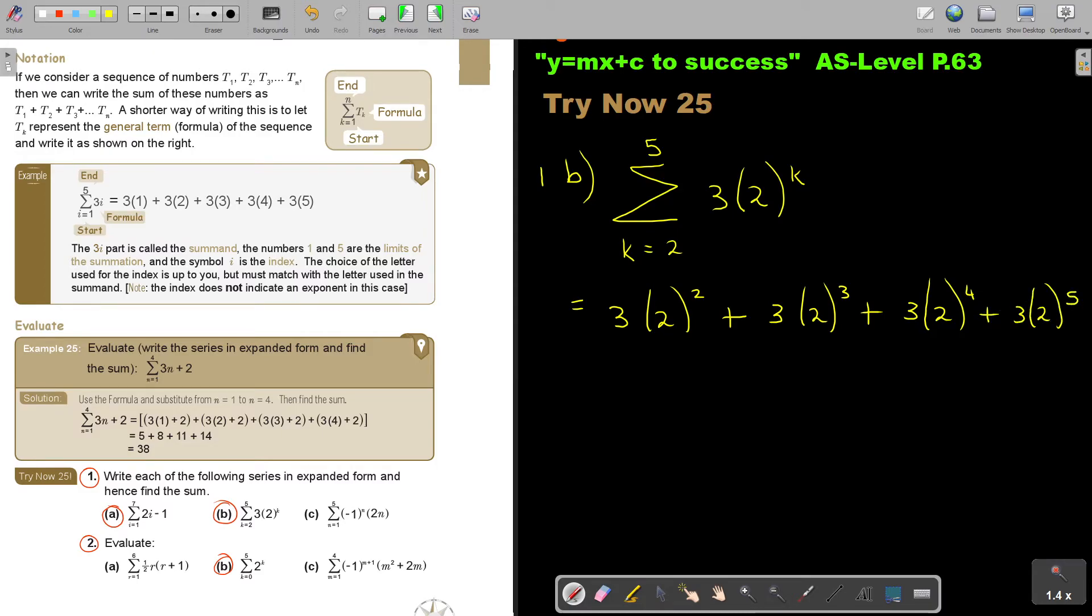plus 3(2^5). And if I'm going to write this out, this is going to be 12. This is going to be 8 times 3, so it's 24. This is going to be 16 times 3, so it's 48. This is going to be 32 times 3, so it's 96. And if I add everything up, I get 180. So the sum, that result, will be 180. Let's do the last one.